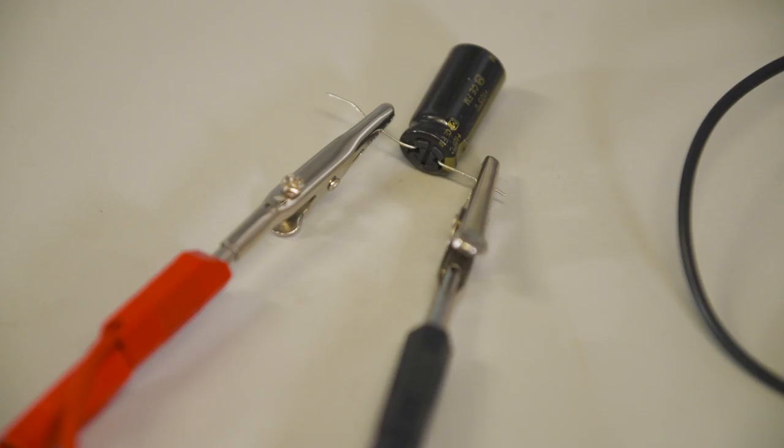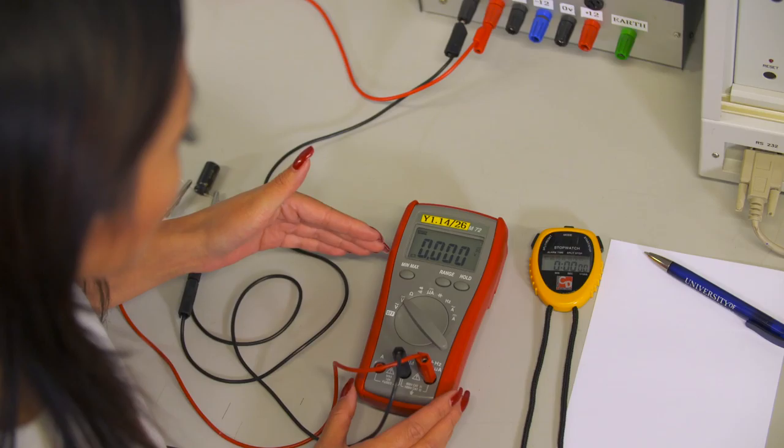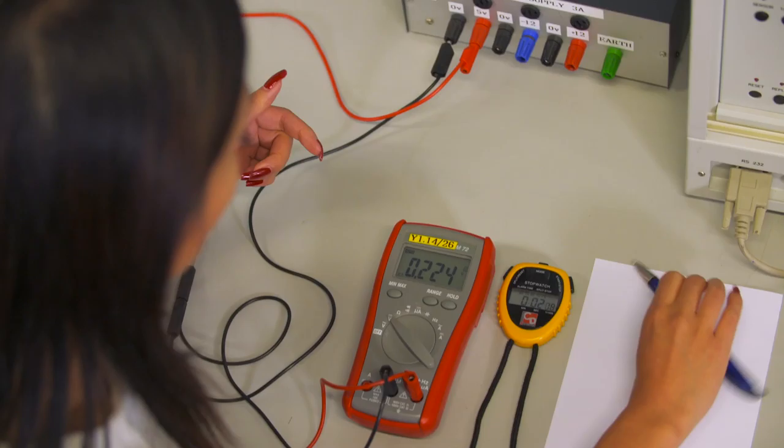Right now the power supply is off, so the voltmeter should be set at zero. To charge the capacitor, I simply turn on the power supply, start my stopwatch and take readings every five seconds.